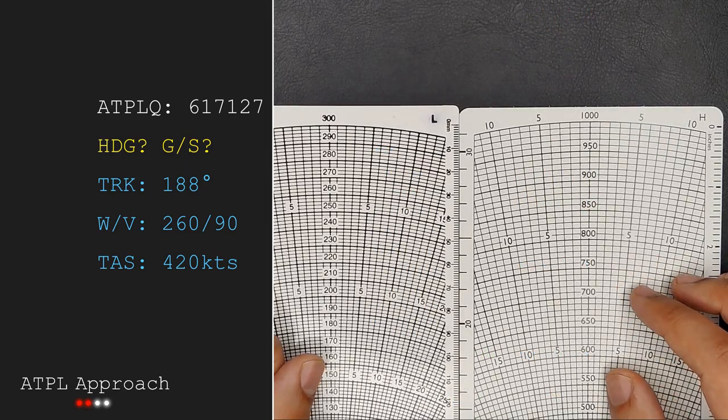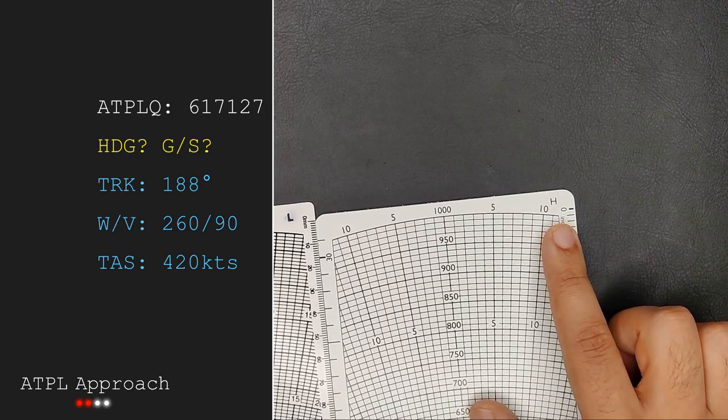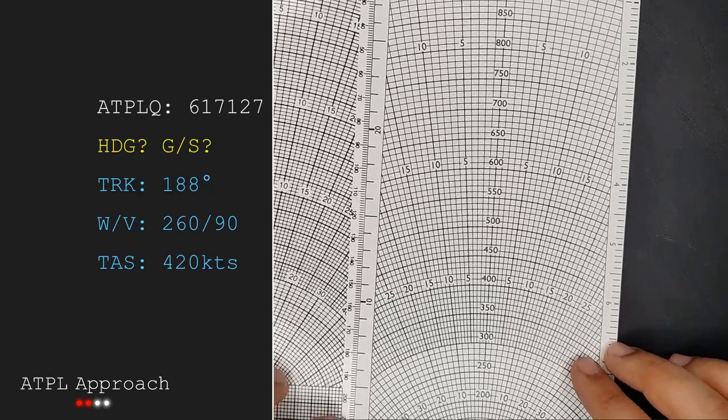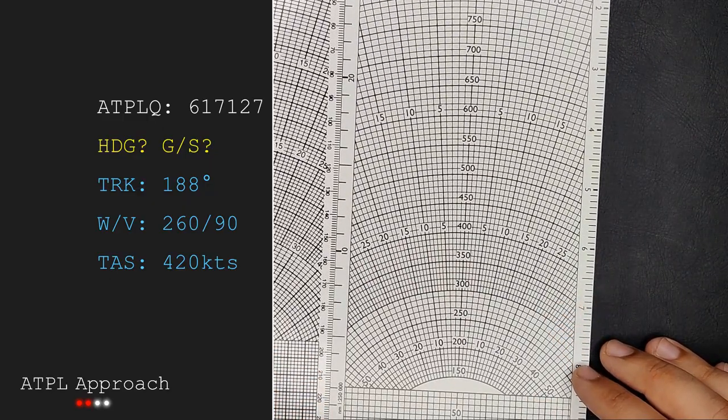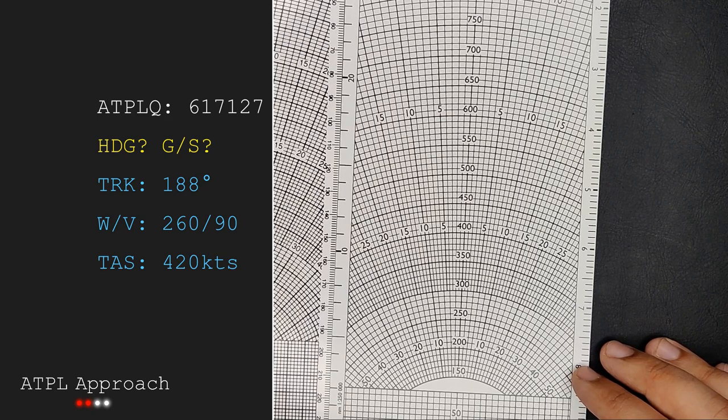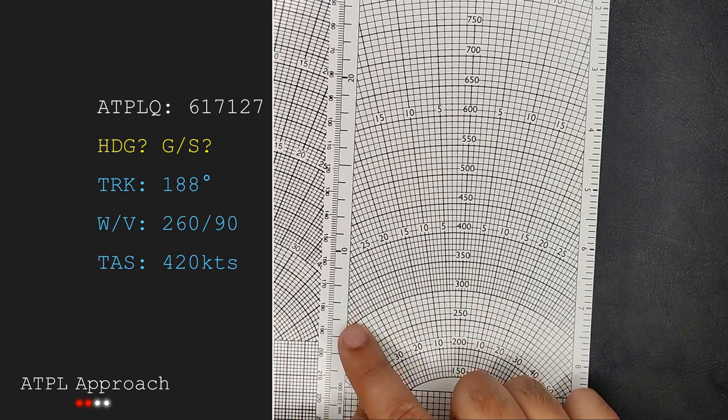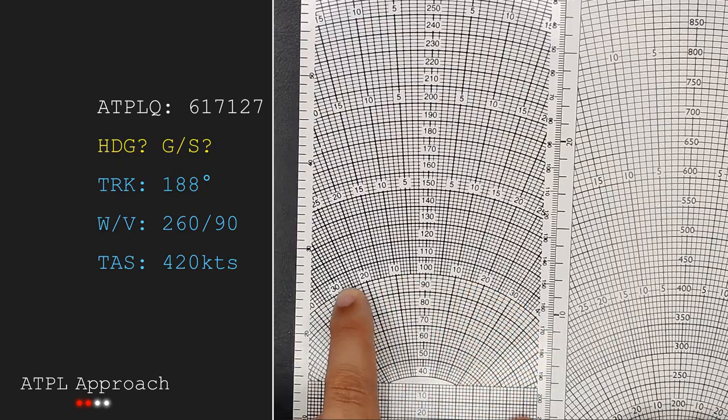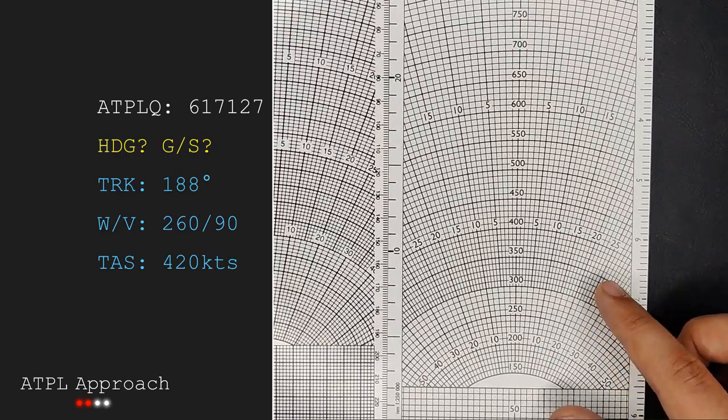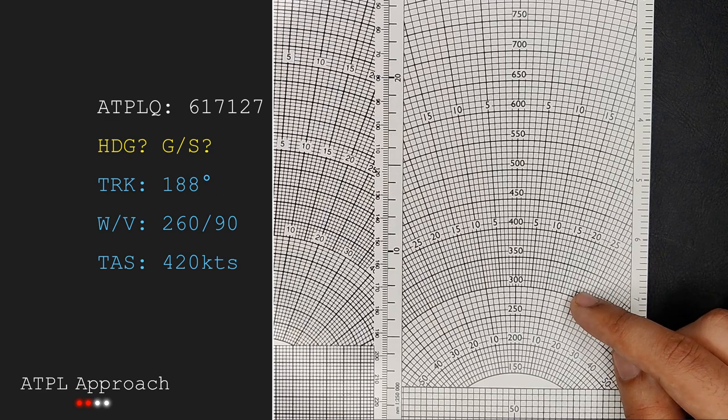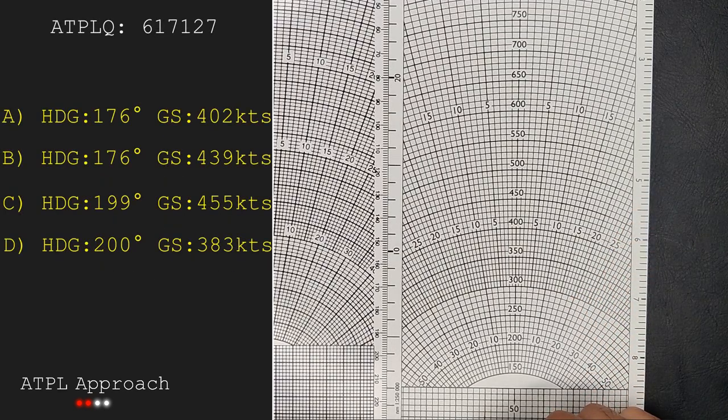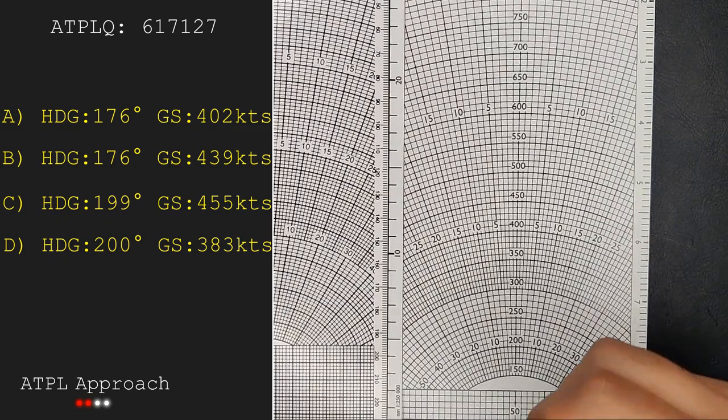We have a TAS greater than 300 knots so we will use the high side. Unfortunately we are on the low end of the high side so we'll need to be very accurate. Whenever we're on the low side of either side, just above the speed arc here at 300 knots on the high side and here of 100 knots on the low side, you can see the drift lines become very close together, which means we need to plot very accurately or else we'll be quite off, especially if the given multiple choice answers are very close together.